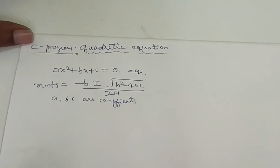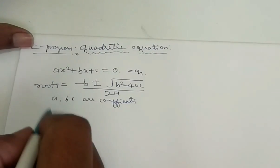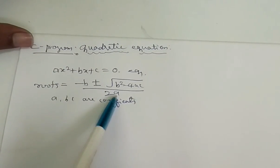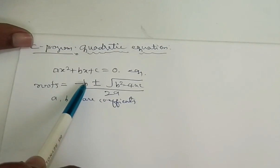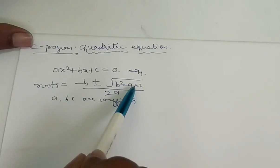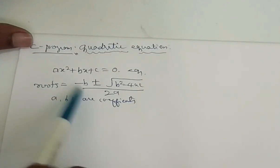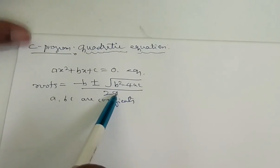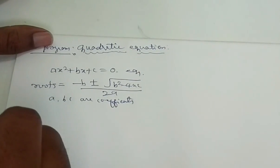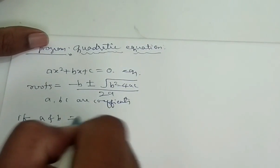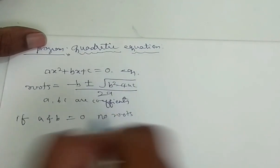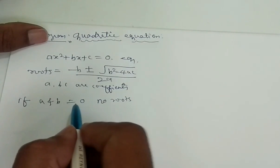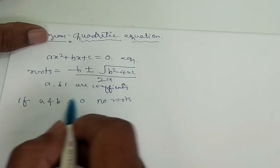Now, to find these roots for the particular equation in a C program, consider here: if B is equal to 0 and A is equal to 0, we cannot find the roots. So, what is the conclusion here? If A and B values are 0, then no roots — it means we cannot find any roots.